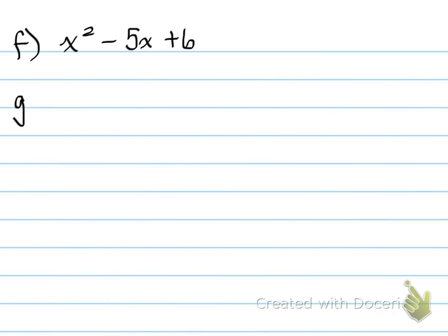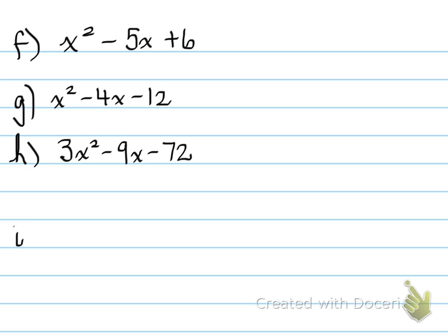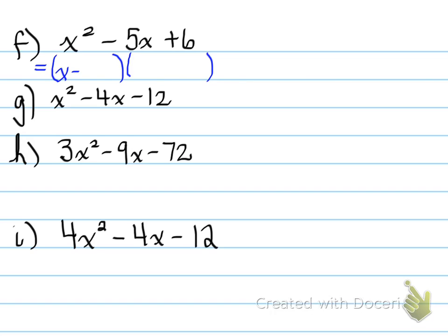x squared minus 5x plus 6. Try and do this one — stop the video now to try it. What two numbers multiply to give you positive 6 and add to give you negative 5? That must be negative 2 and negative 3, and you're right. So x minus 3 and x minus 2 are our factors.